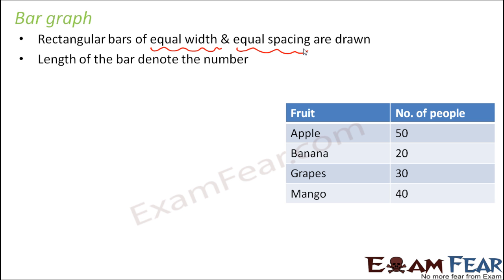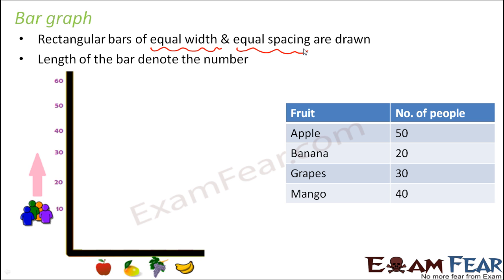The second thing is the length of the bar denotes the number. For example, if you are given this table and you have to draw a bar graph, you plot the fruit options on the x-axis and the numbers on the y-axis.